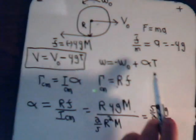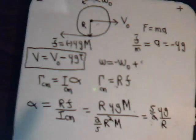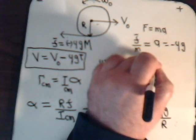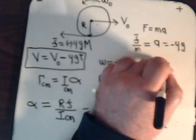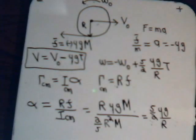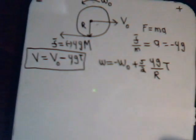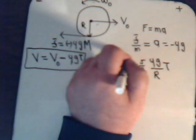We can now write the angular acceleration in the equation: omega equals minus omega-naught plus five-halves mu G divided by R, times time. So we have an equation for the angular velocity at any time. If we know the coefficient of friction, we can determine the angular velocity.